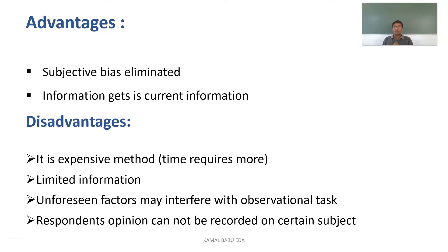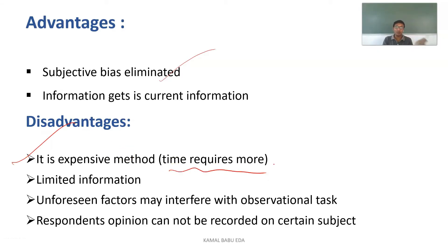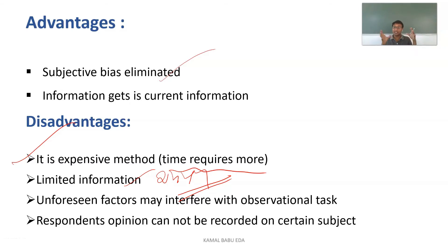Advantages of the observation method: subject bias is eliminated and the information obtained is current — by seeing directly, you can get real-time data. Disadvantages: it is a very expensive method and requires more time, as you have to go to the community, stay with them, mingle, and gain their trust. It gives only limited information since you cannot observe the person 24/7. Unforeseen factors may interfere with the observational task, and respondents' opinions cannot be recorded on certain subjects.